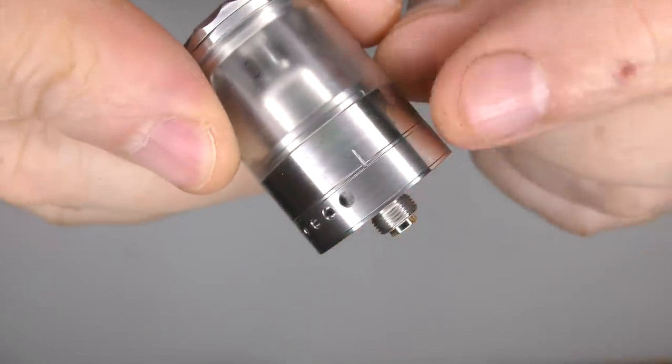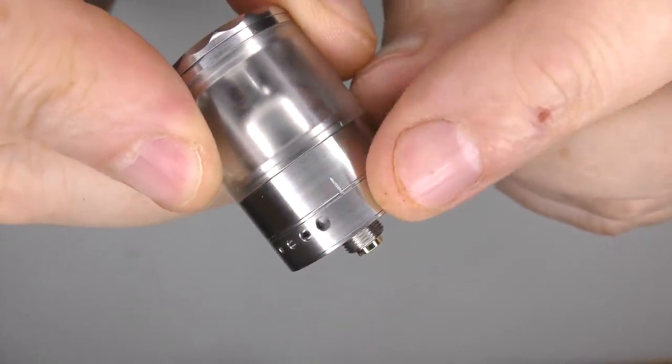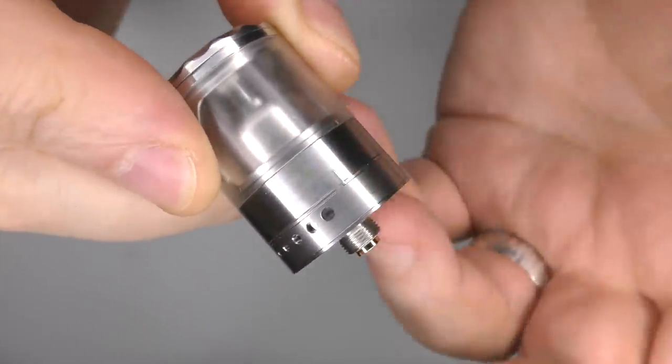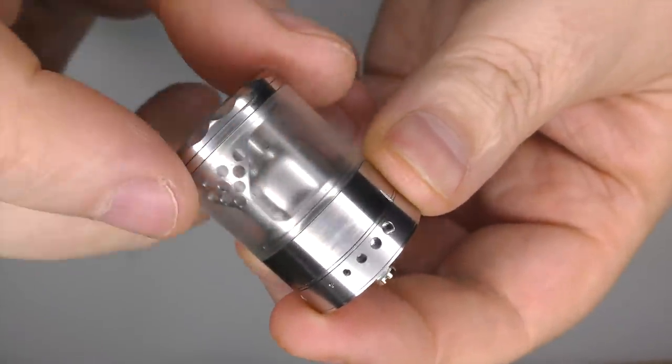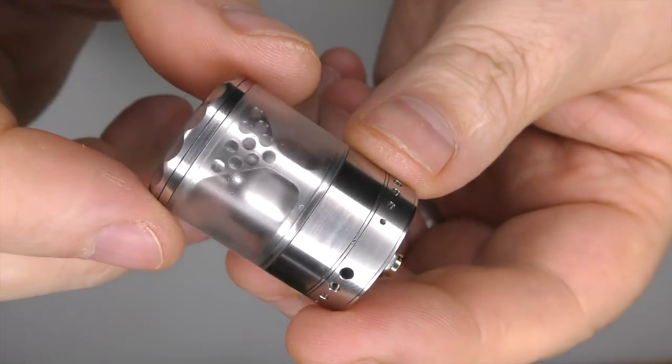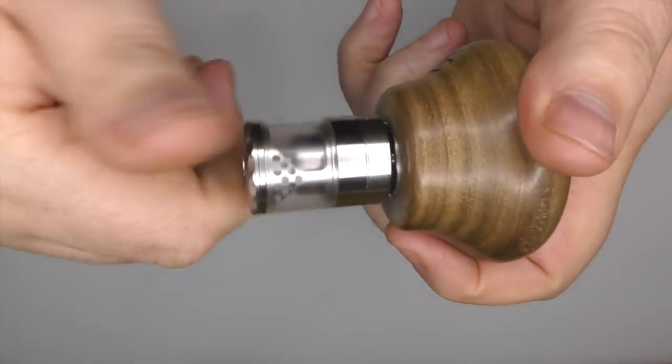The eagle-eyed amongst you will notice this little indicator line here. Well, we'll come back to that when I take the tank to bits. The actual tank here itself is PMMA, and it holds 3 milliliters of juice.